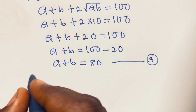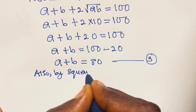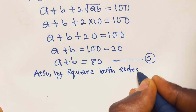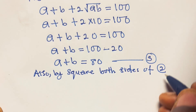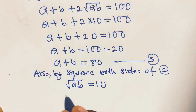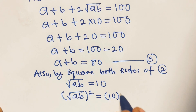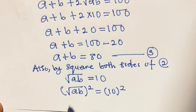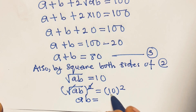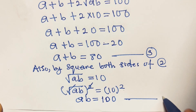Also, squaring both sides of equation 2 — since square root of ab equals 10 — we square it to get ab equals 10 squared, which is 100. Let's name that equation 4.